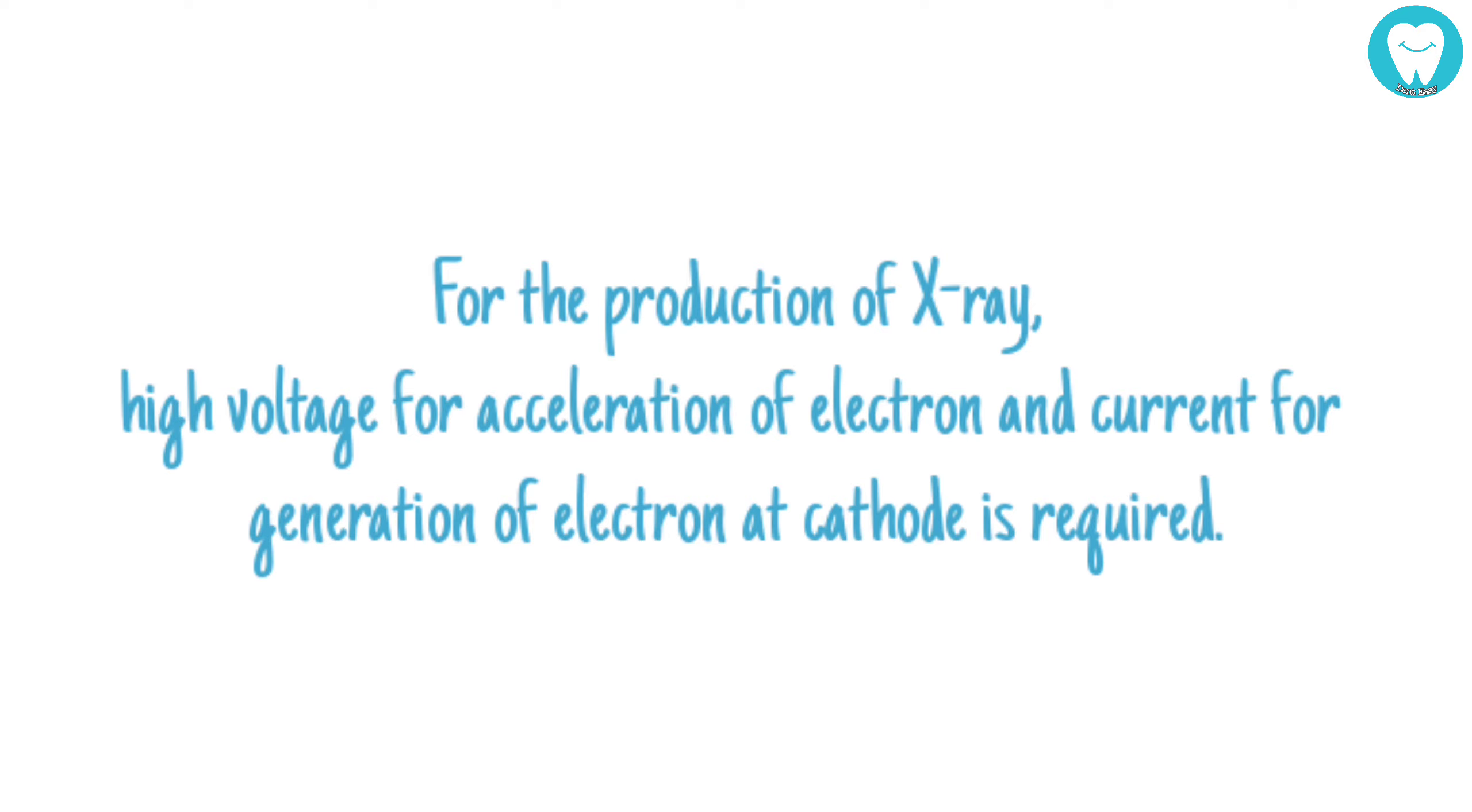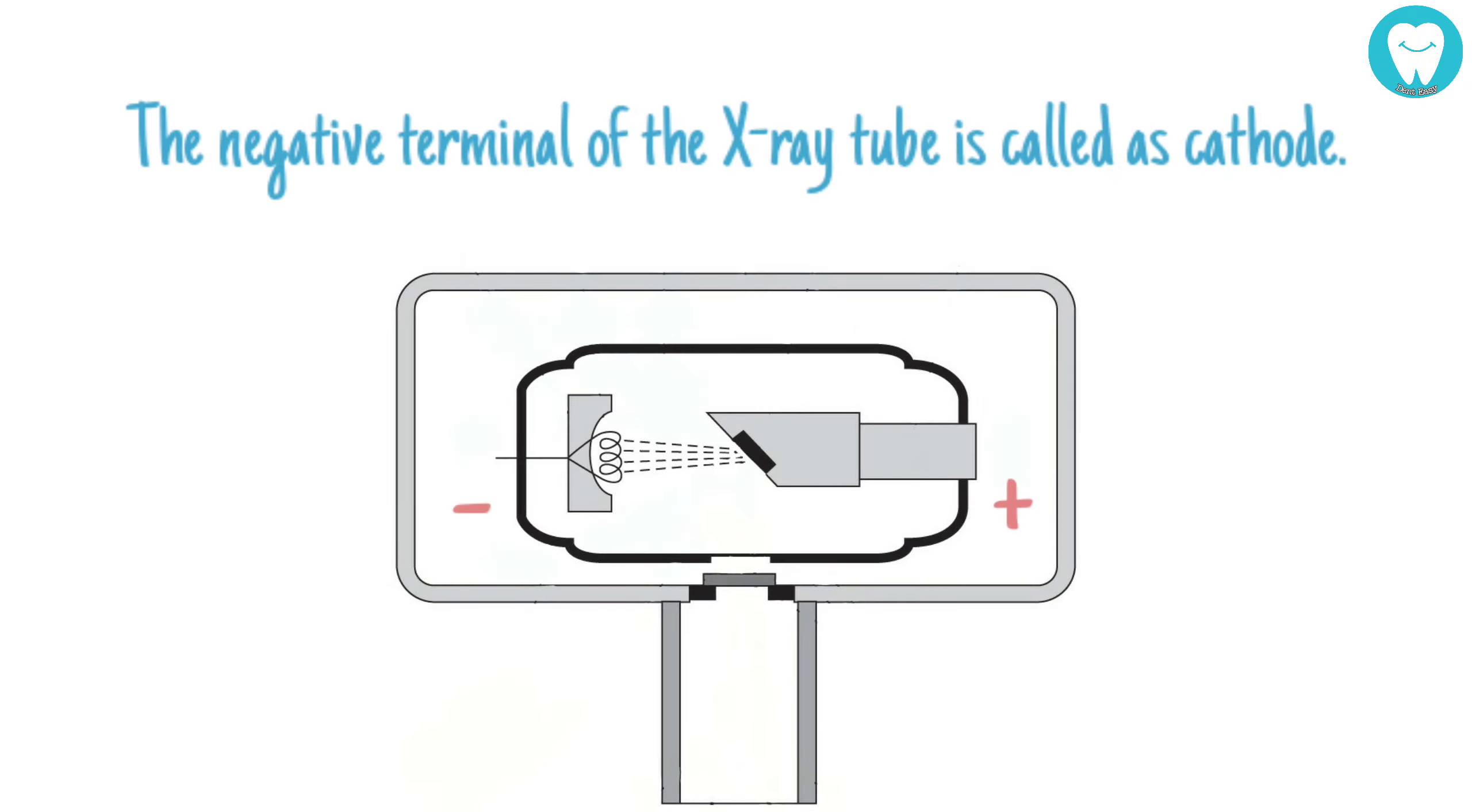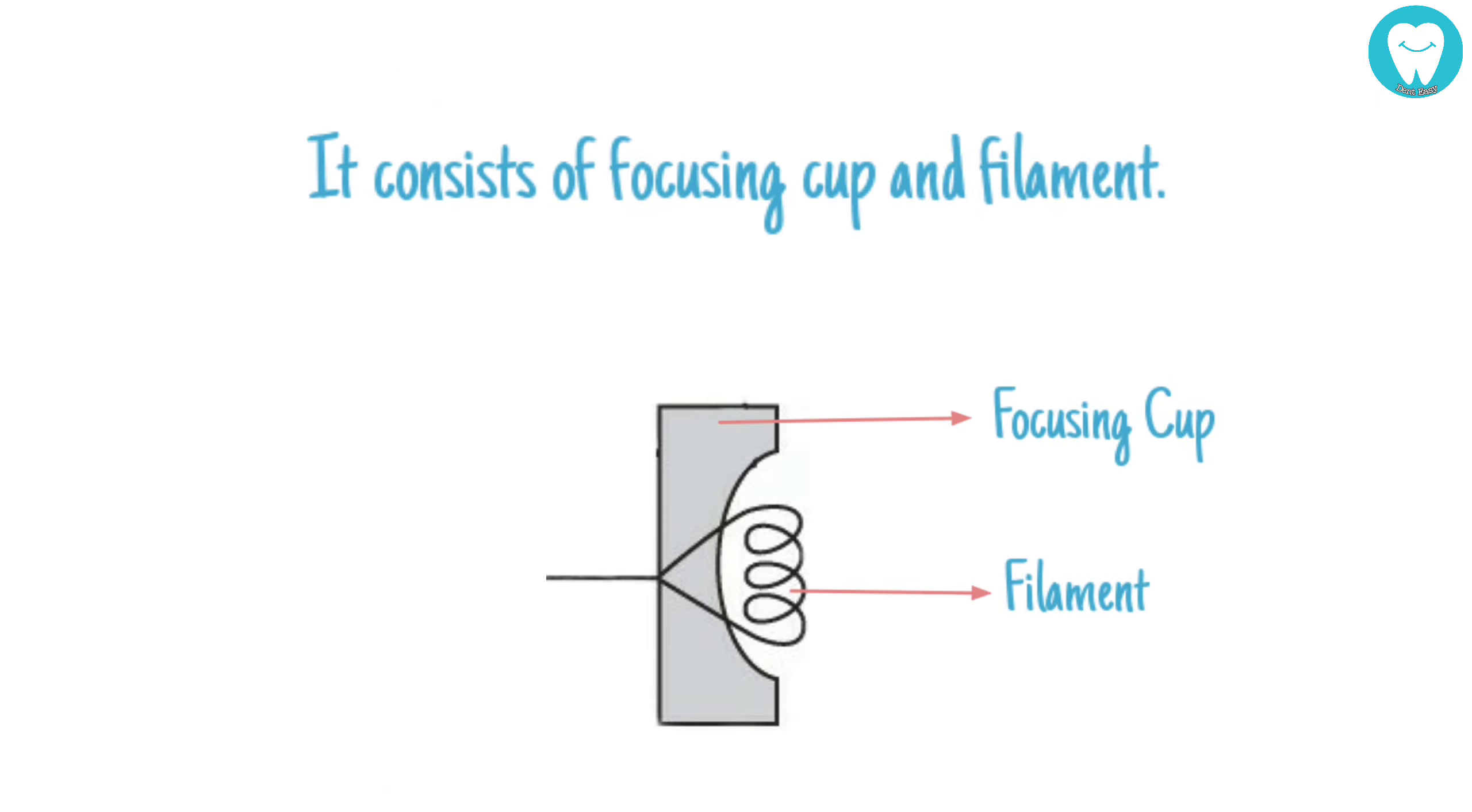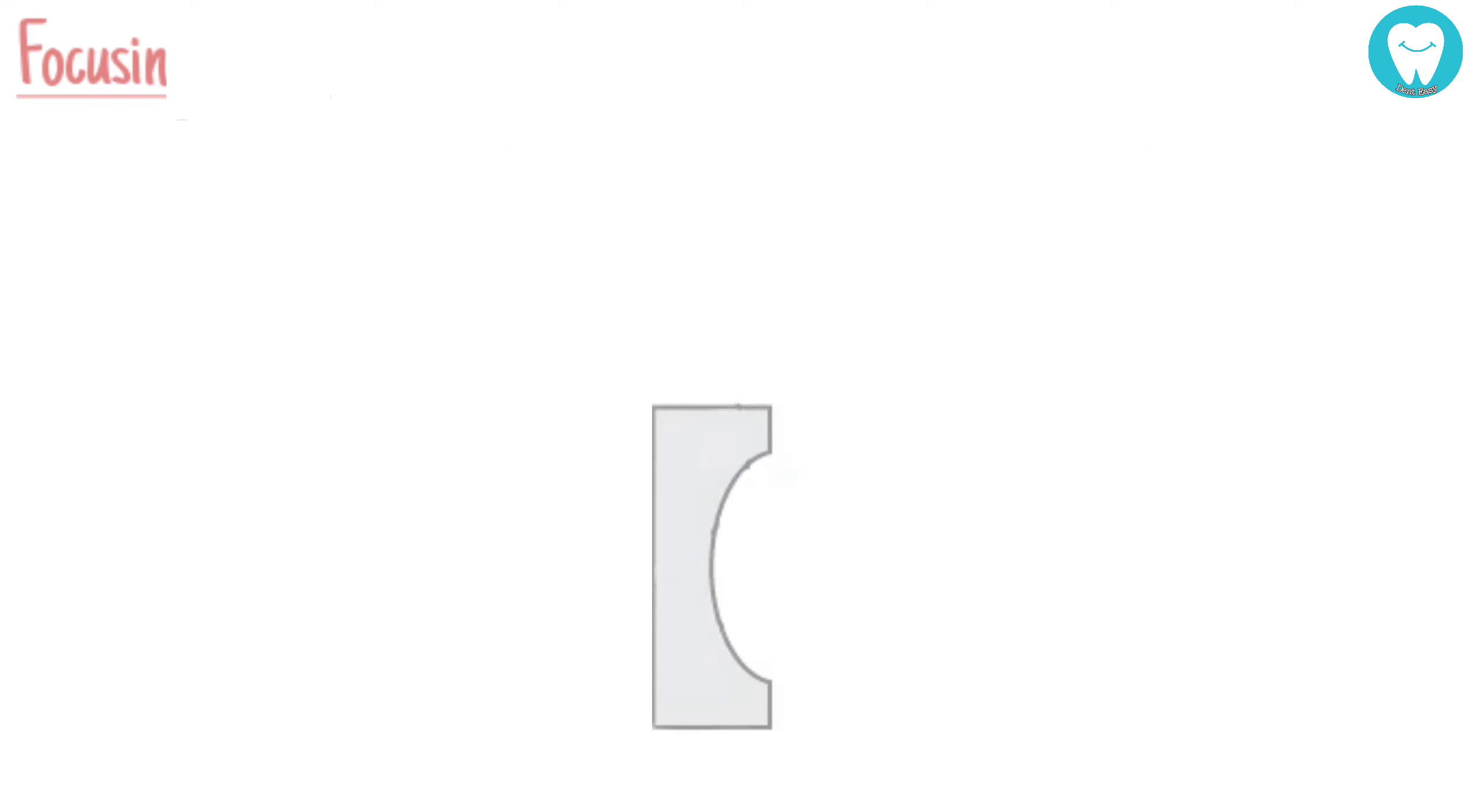Now let's take a look at the cathode. The negative terminal of the X-ray tube is called the cathode. The cathode is placed approximately one inch away from the anode and consists of the focusing cup and filament.